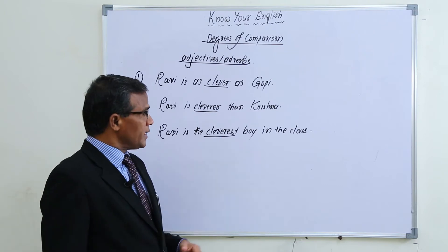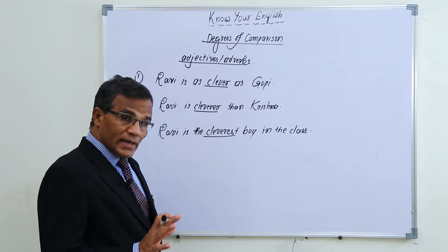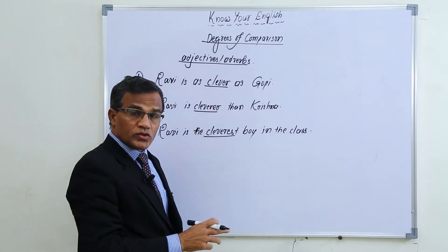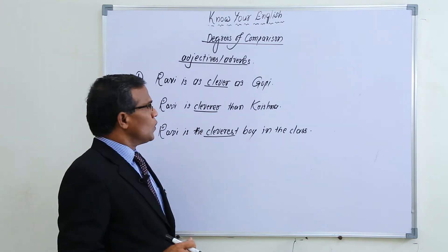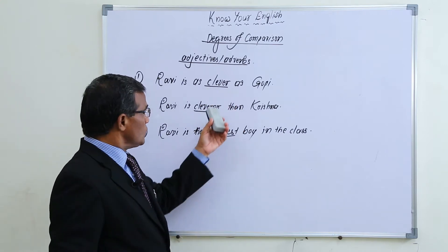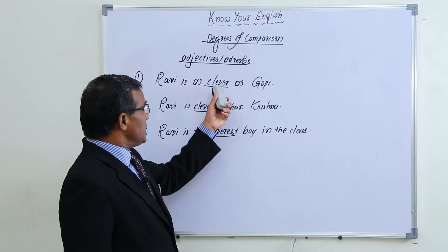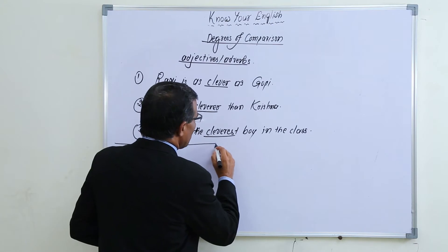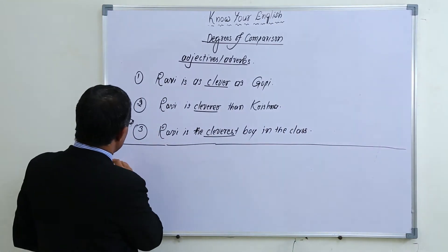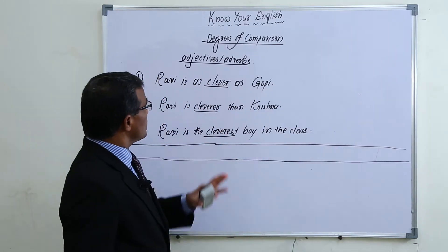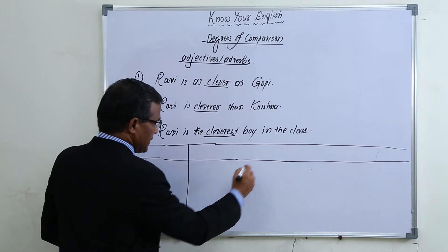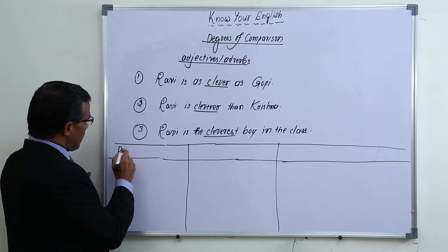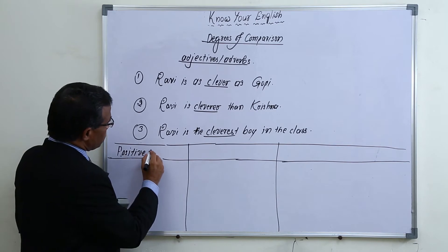What we have to observe here is: in the first sentence we used 'clever,' in the second sentence 'cleverer,' and in the third sentence 'cleverest.' So the adjective 'clever' has three forms. Those three forms are called degrees. 'Clever' is said to be in positive degree form.